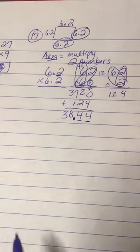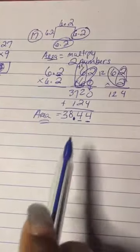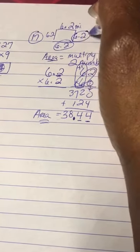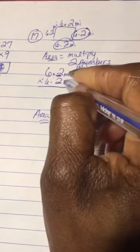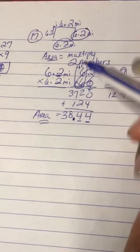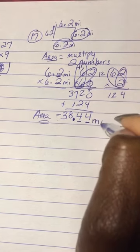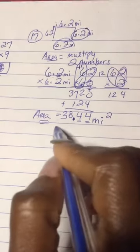So 38.44 is my area. Now you have to remember that the units, when you start off as miles, that's miles, miles, miles, and miles. When I multiply 6.2 times 6.2, that had miles and that had miles, so it had two miles, so miles to the second power, which means squared.